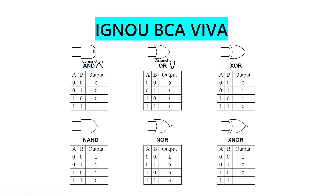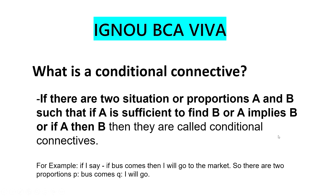NAND gate is the inverse of AND, and NOR gate is the negation of OR. XNOR gate is the inverse of XOR. Coming to the next question: what is a conditional connective? Conditional connective is 'if A then B' — if there are two propositions A and B such that A is sufficient to find B, then A implies B, and they are called conditional connectives.